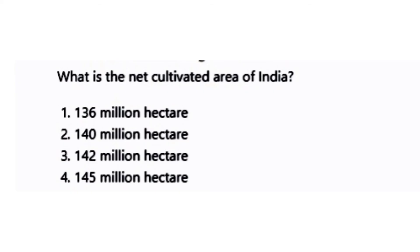The next question: what is the net cultivated area of India? The options are 136 million hectare, 140 million hectare, 142 million hectare, and 145 million hectare.